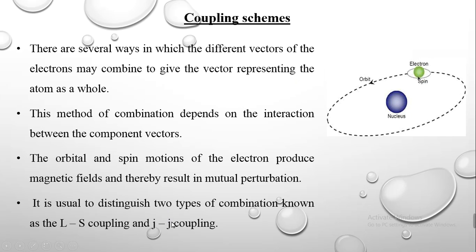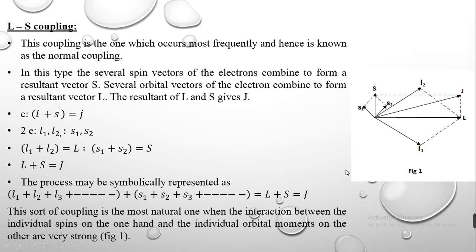We have two types of coupling schemes: one is LS coupling and the other is JJ coupling. LS coupling is the normally occurring coupling — it occurs most frequently in atoms and is also known as normal coupling or Russell-Saunders coupling.